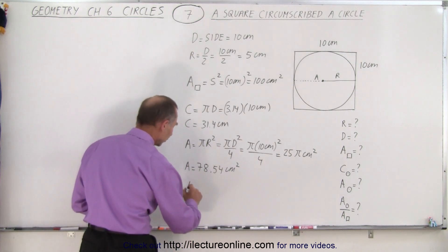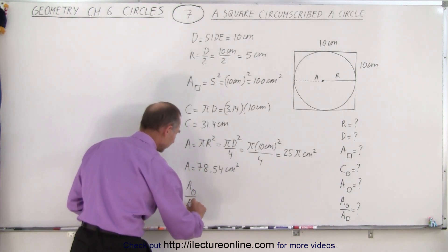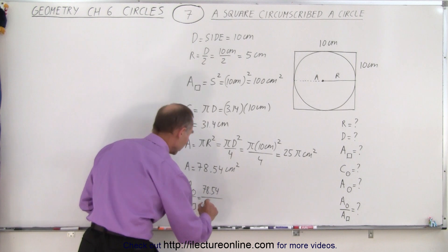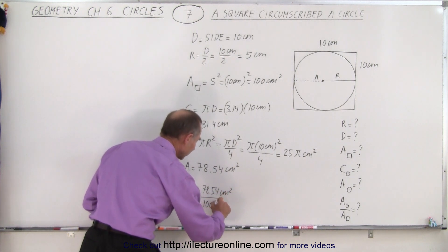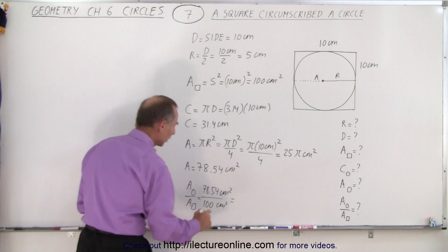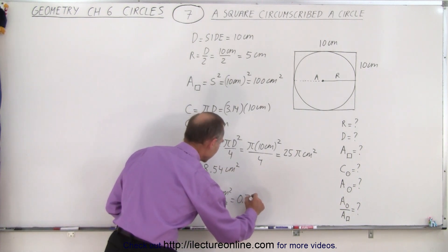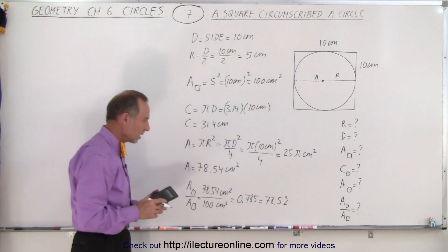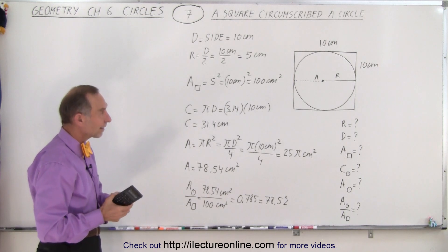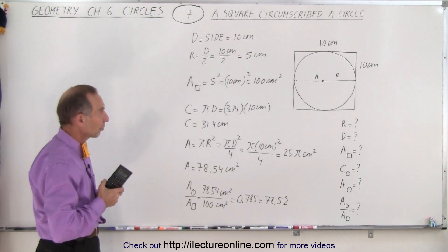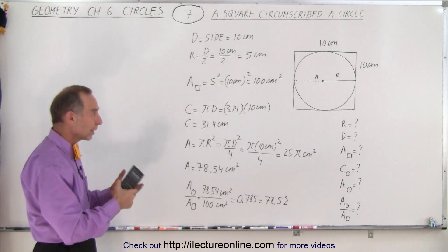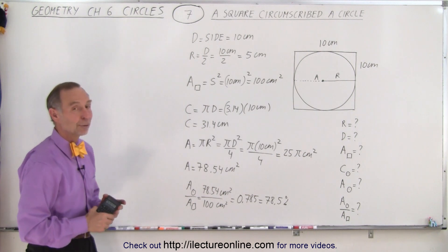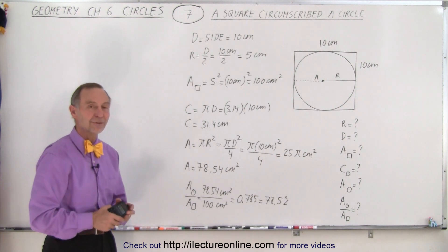Now to find the ratio. The area of the circle divided by the area of the square is equal to 78.54 divided by 100, both in centimeters squared. So the ratio will be 0.785, or 78.5 percent. You can see that when you place a circle inside the square, the ratio of the circle area to the square area is actually bigger than if you have it the other way around. This is how you approach that type of problem and this is how it's done.